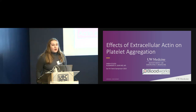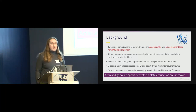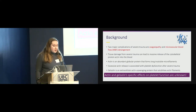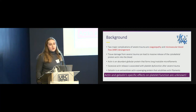A little bit of background as to why we even went into this realm. My mentor Alex St. John looks at trauma-induced coagulopathy, and he noticed that in trauma patients there's an increase in actin and a decrease in gelsolin, its capping protein. Tissue damage from severe trauma can lead to a mass influx of actin into the blood via cellular death. Actin is a super abundant protein found in the cytoskeletal wall, in muscles, and in platelets.